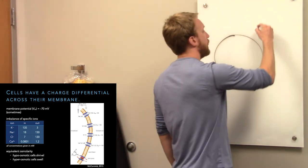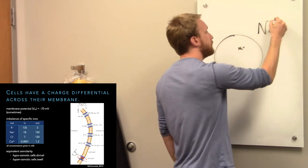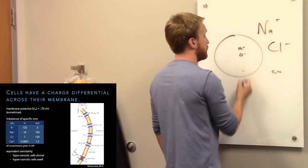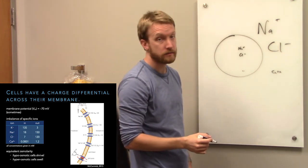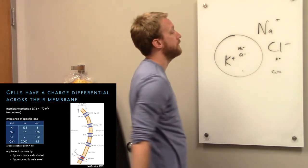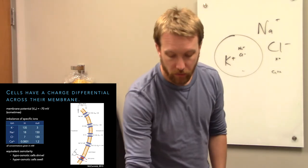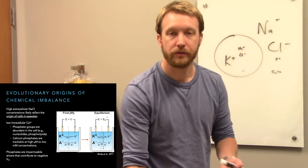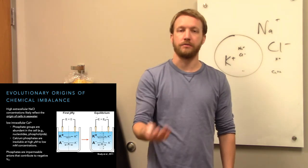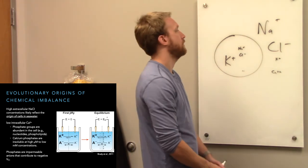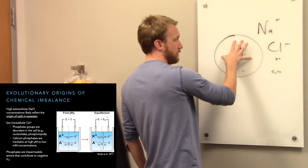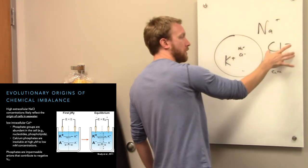You can always look up these values, but to remember them, think about how life probably started — somewhere floating around in the ocean. The ocean is made of salt water, sodium chloride. So the outside world, when life was first created, had a lot of sodium and chloride outside of cells. Outside cells we have sodium chloride — salt water. That leaves potassium to pick up the slack inside, because we have to have about the same amount of dissolved stuff overall.